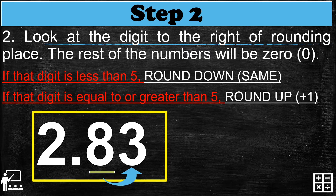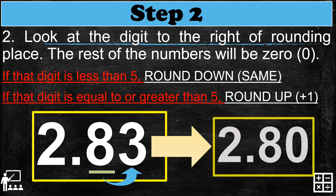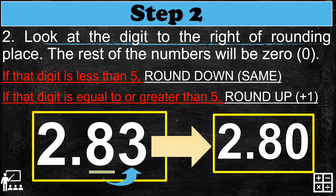Three is less than five, and if that digit is less than five we round down, meaning the eight stays as is. So the rounding of 2.83 is 2.8 — the three becomes zero.